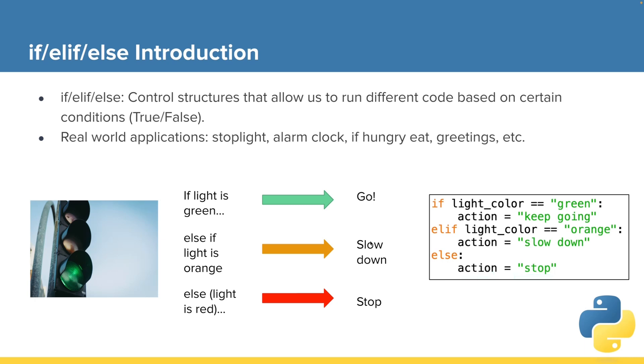We could also interpret this and say, well, what if the light's broken? We could say, elif light color is orange, do its thing.